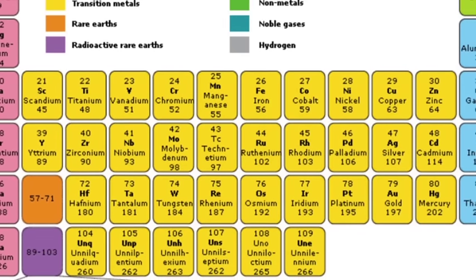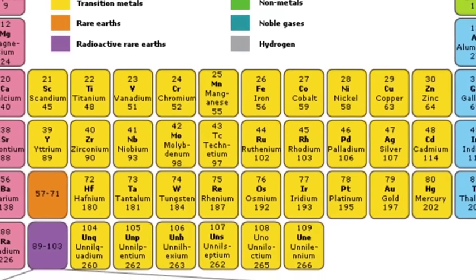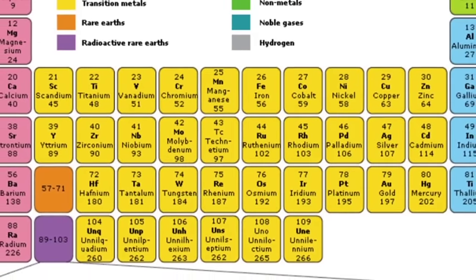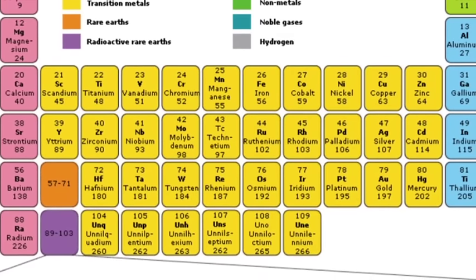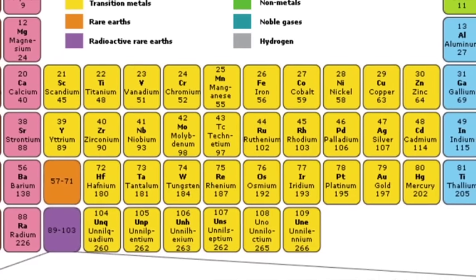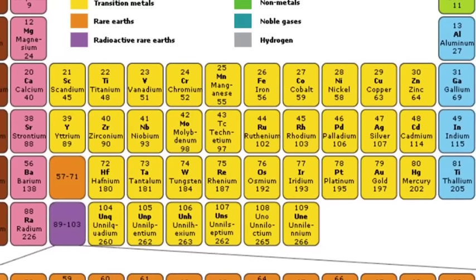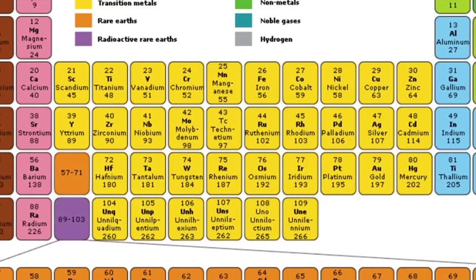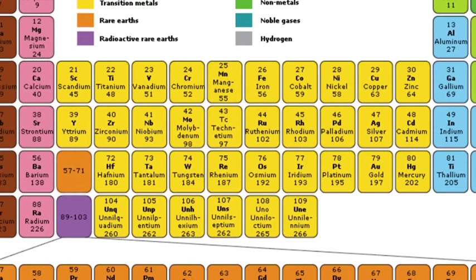There are a lot of transition metals. The first few are scandium, titanium, vanadium, and chromium, but they go all the way from group three through group twelve, and even include those two rows at the bottom as well.